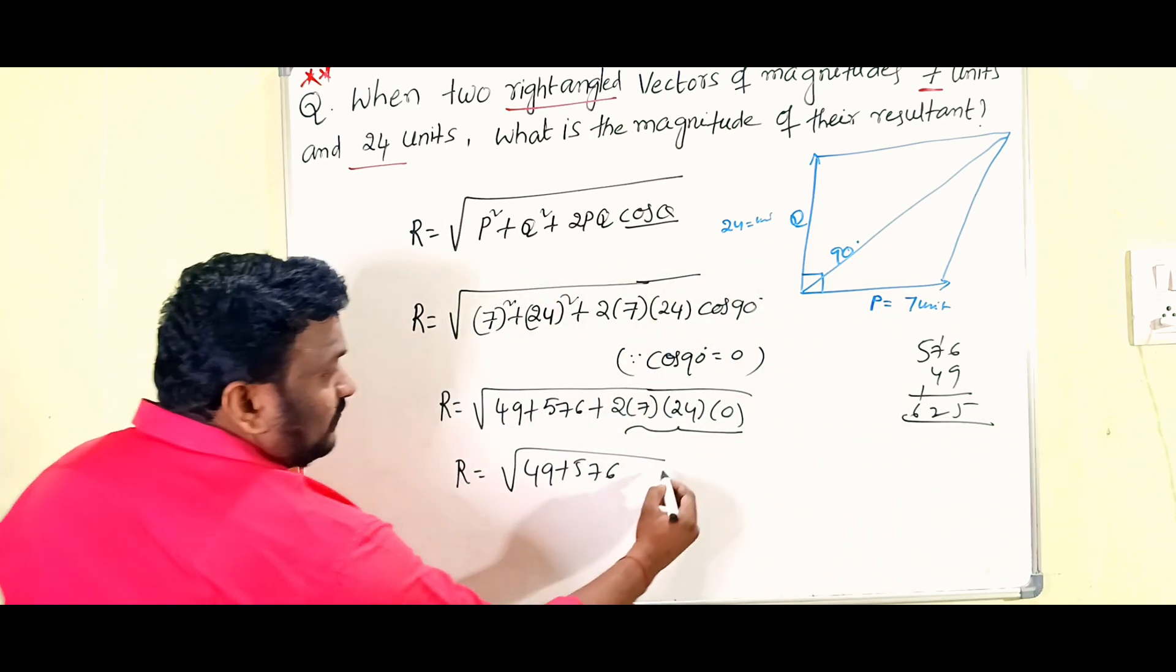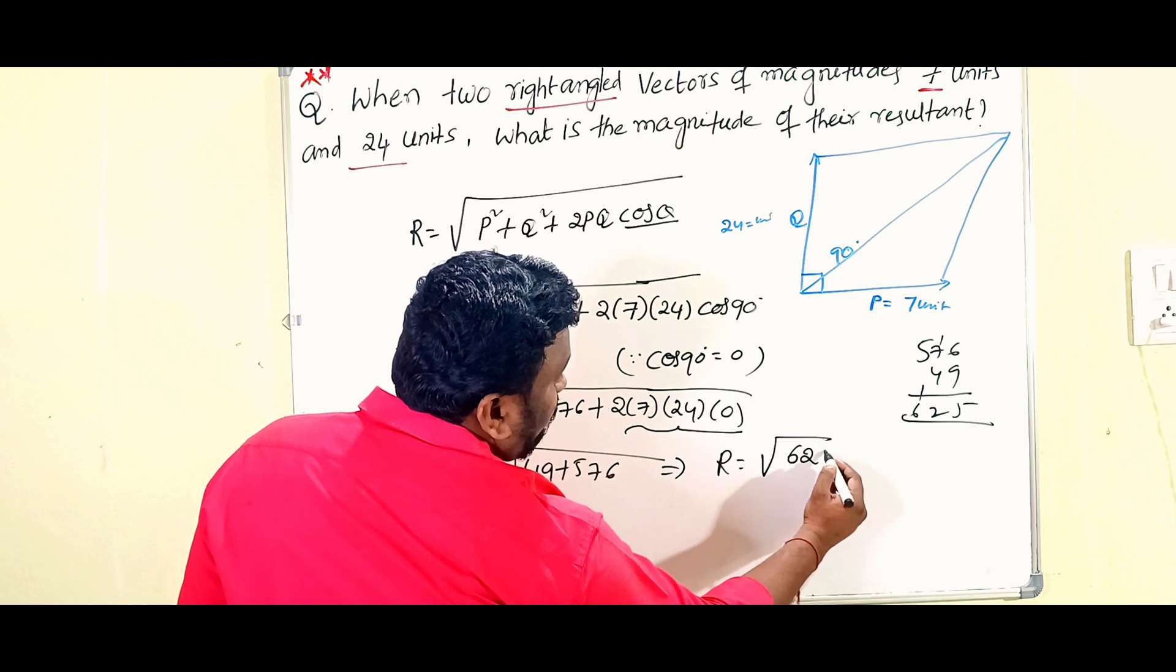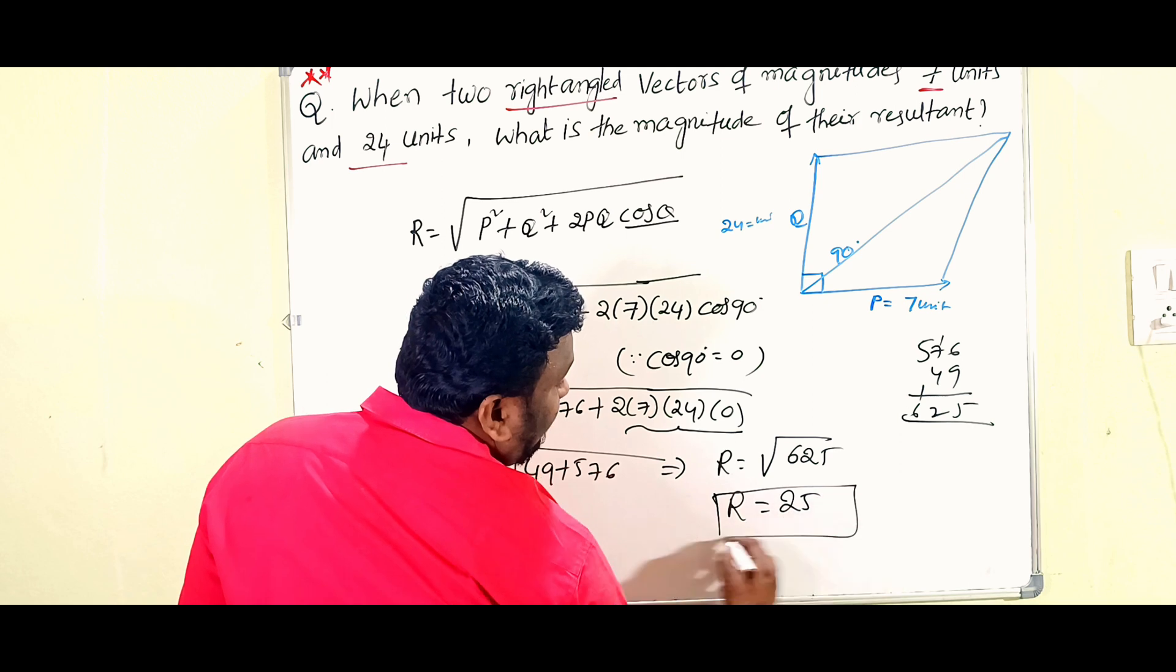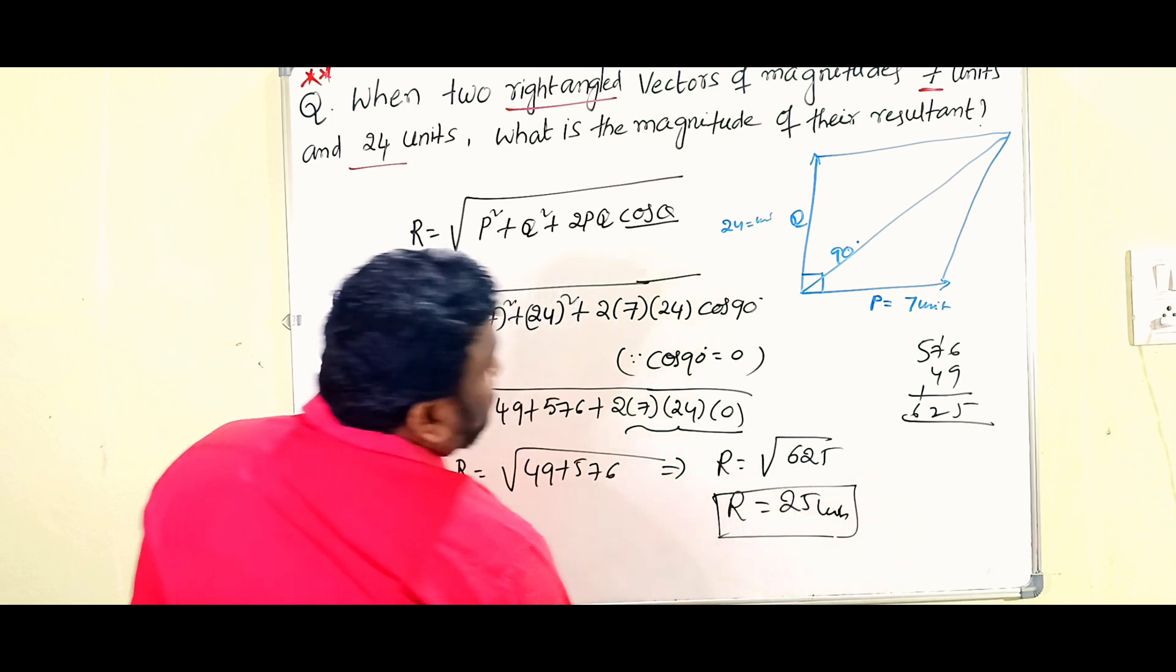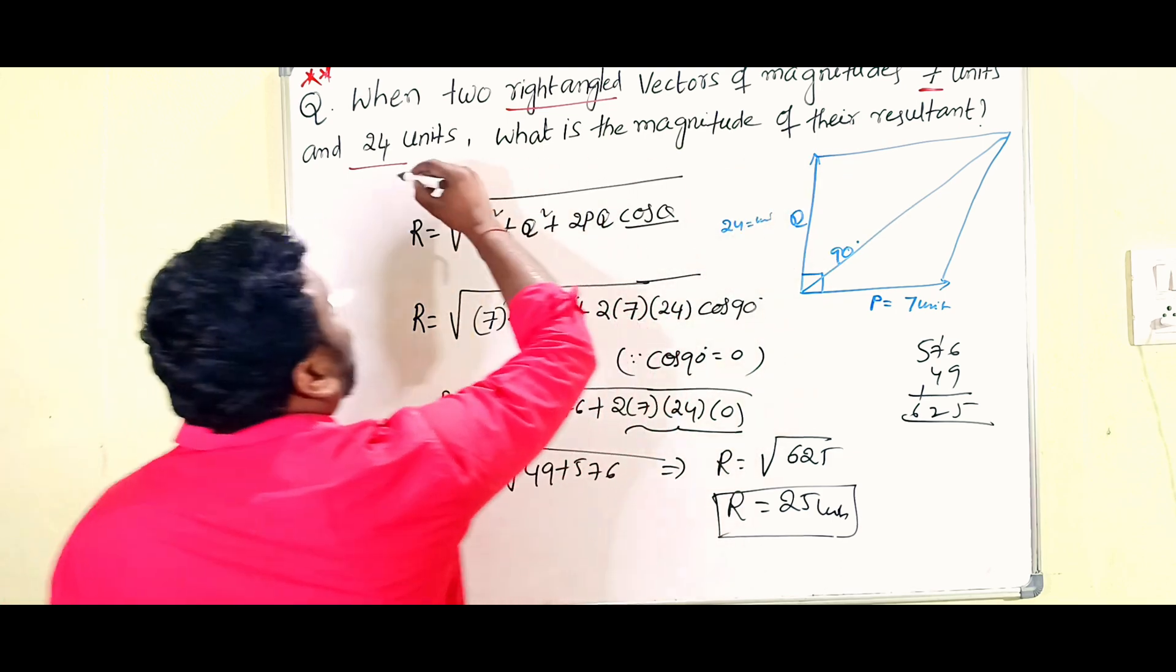Equals 625. So that implies R equals under root of 625. We know 25 times 25 is 625, that's why R equals 25 units. So this is the resultant of vectors 7 units and 24 units.